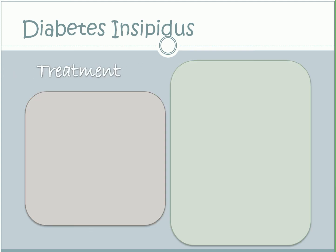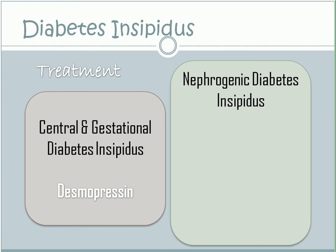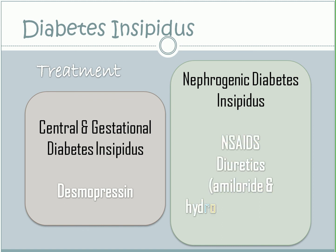Treatment includes administration of desmopressin, which is a synthetic analog of antidiuretic hormone. It is the drug of choice for patients with central diabetes insipidus and can also be given to patients with pregnancy-related diabetes insipidus. For nephrogenic diabetes insipidus, treatment includes anti-inflammatory drugs and diuretics such as amiloride and hydrochlorothiazide.